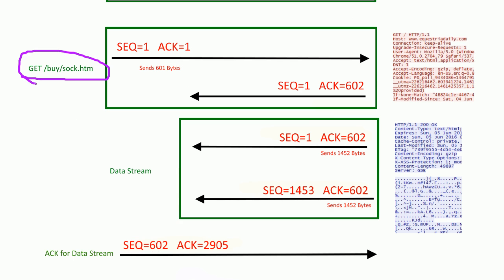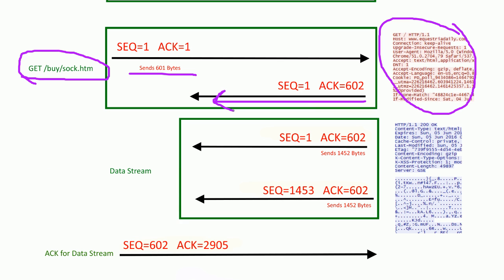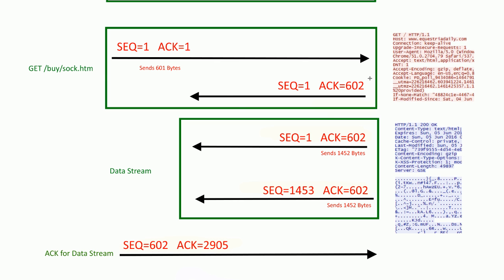After the three-way handshake we do a GET request — we need those socks. This is what a GET request looks like. We send 601 bytes and we get an acknowledgement from the server saying 'I got the 601 bytes, and the next one I expect is 602.'